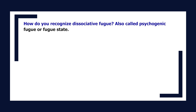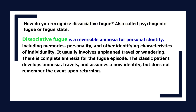How do you recognize dissociative fugue, also called psychogenic fugue or fugue state? Dissociative fugue is a reversible amnesia for personal identity, including memories, personality, and other identifying characteristics. It usually involves unplanned travel or wandering, with complete amnesia for the fugue episode. The classic patient develops amnesia, travels, and assumes a new identity, but does not remember the event upon returning.